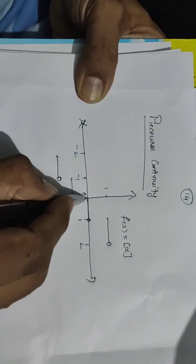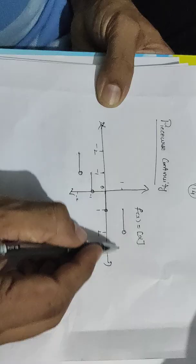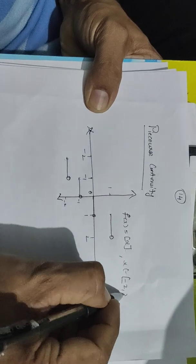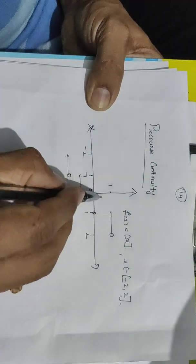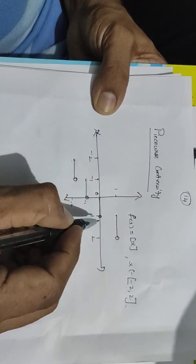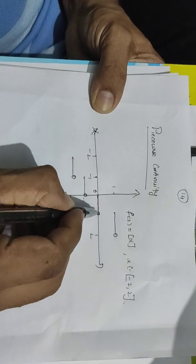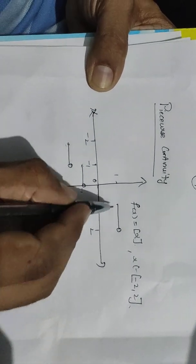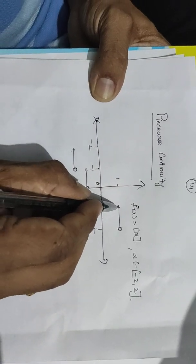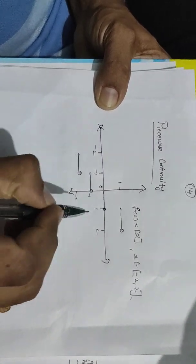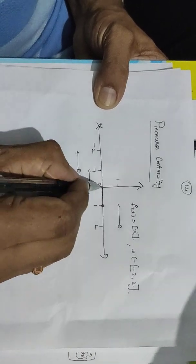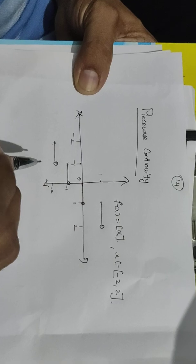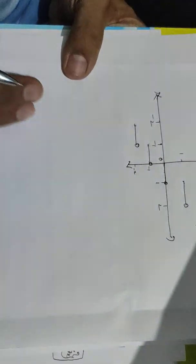The third point x is an element of the closed interval. This is the left limit. The 0.99 value and the 1.1 value show that 1 is a discontinuity point. 0 is also a discontinuity point, minus 1 is also a discontinuity point. This is the piecewise continuity concept.